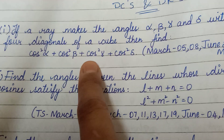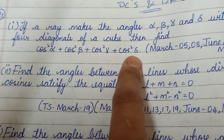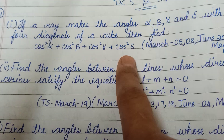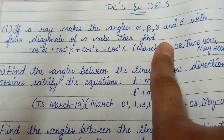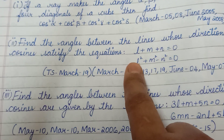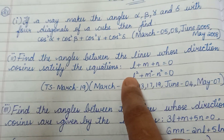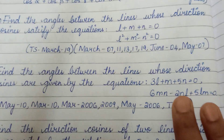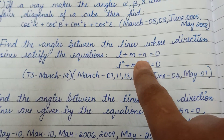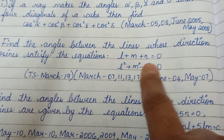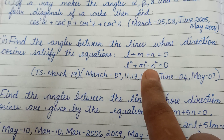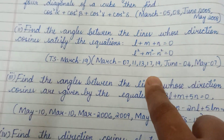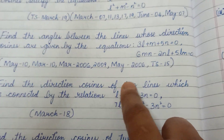Cos square alpha plus cos square beta plus cos square gamma plus cos square delta. Find: 4 by 3. L plus M plus N equal to 0, and L square plus M square minus N square equal to 0. This type of problem is just x5.